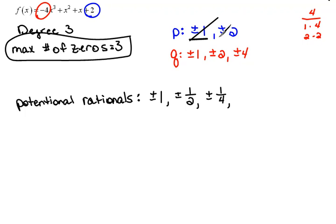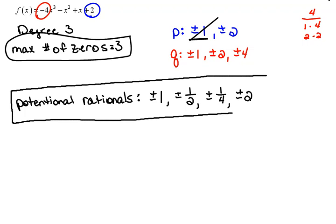Now I'm going to start in with the 2. 2 over 1 would be plus or minus 2. 2 over 2 would be 1, and we already have that listed. We don't have to list it again. 2 over 4 would be 1 half, and we actually already have that one listed too. So our potential rationals would be these numbers right here.